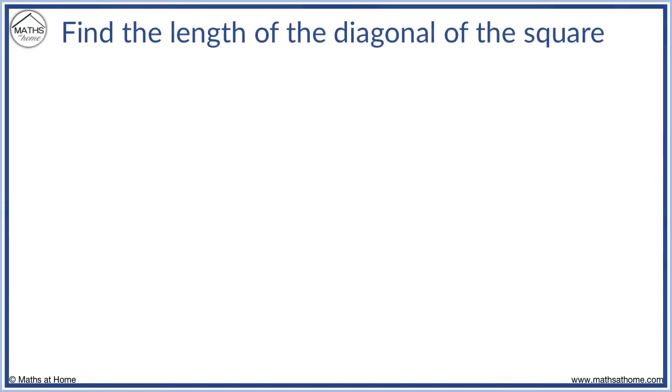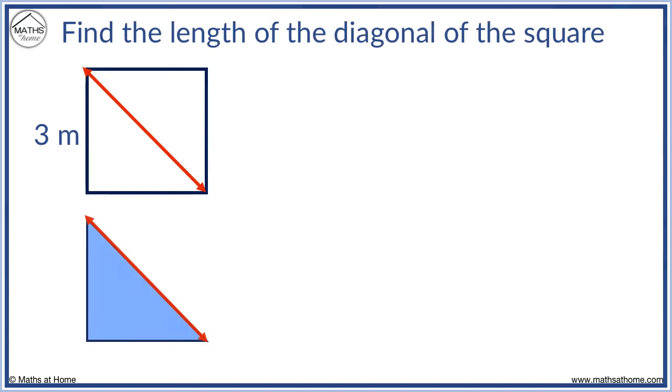In this example, we find the length of a square's diagonal. Again, we take the triangle below the diagonal. The height is 3, and since we have a square, the base is also 3.